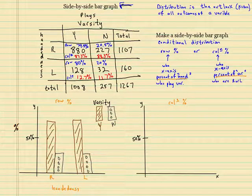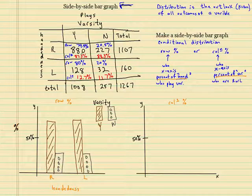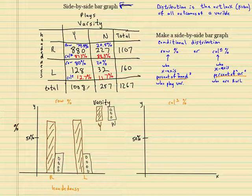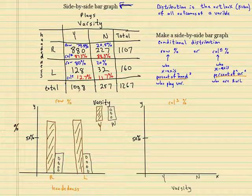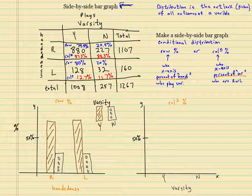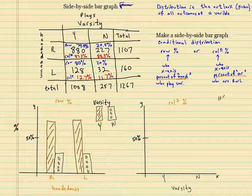The column, the way I got this 87.3 is I did 880 divided by 1008. The column percentage says out of everybody that plays varsity, yes, what percentage of them are right-handers? Now I got it switched up. So this is varsity. And the two categories for varsity are yes and no. So I'm saying out of everybody that's a yes, what percentage of them are right-handers? So this is going to be my handedness.